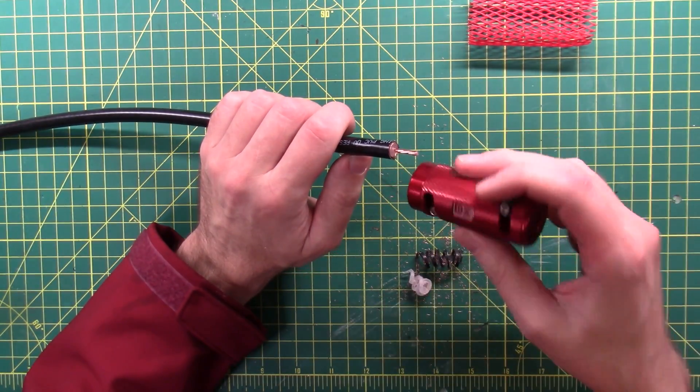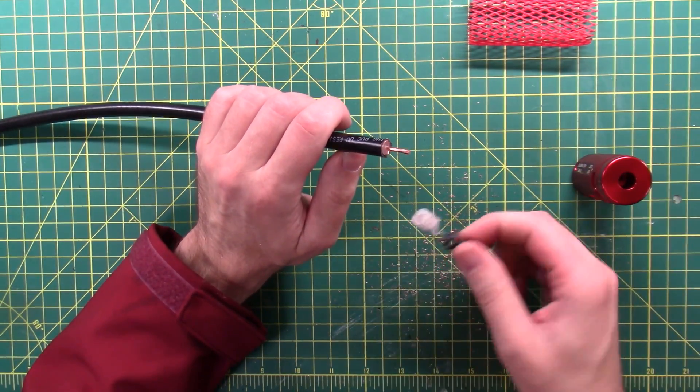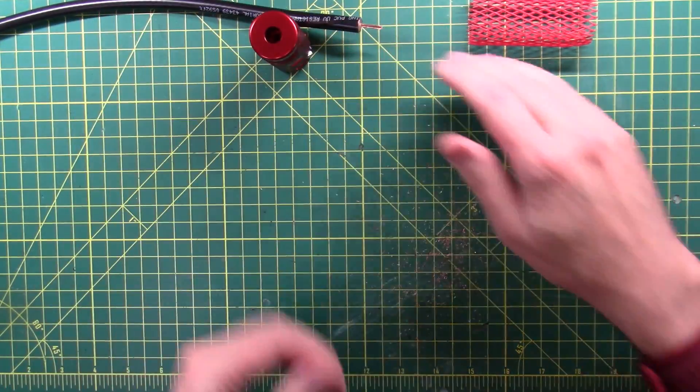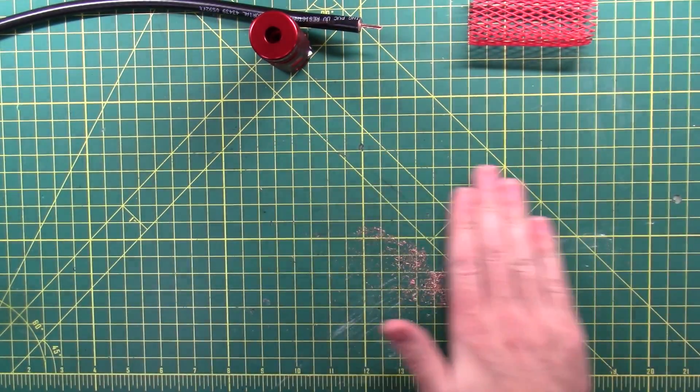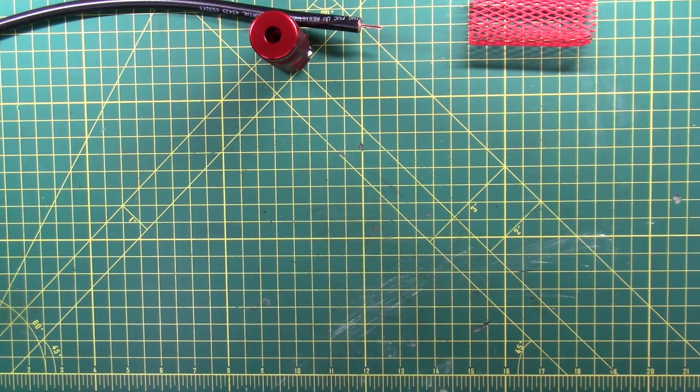So push it in, start twisting until it gets to the twist. It'll bottom out, it'll stop, all your mess will stop coming out, and you're good to go. The tool comes from the factory pre-sized to get you where you need to get. Let's get rid of all of that. Copper splinters in my fingers now.